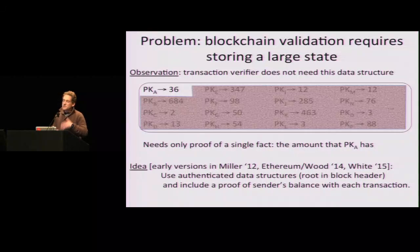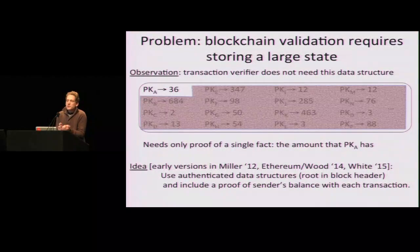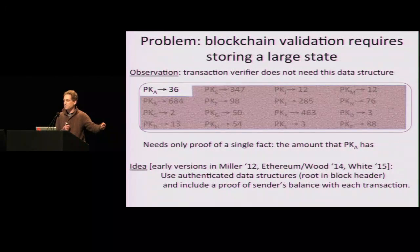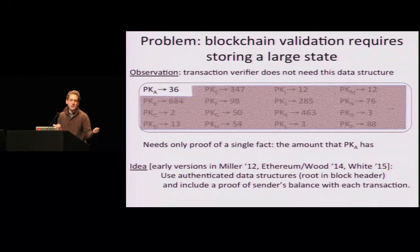This idea, crystallized more precisely by Bill White, is that we actually use authenticated data structures, and Alice will prove, as part of the transaction, that she has the right amount of money. We will authenticate this key-value store and show that the value associated with Alice's public key is 36, and therefore you can subtract 14 from it and still remain positive.